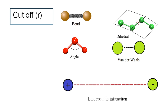The cutoff of interaction is also required to speed up MD simulation calculations. As explained in part 1, there are bonded interactions like bond, angle, and dihedral, and non-bonded interactions like van der Waals and electrostatic. Bond, angle, dihedral, and van der Waals are short-range interactions. Atoms usually interact within 0.5 nanometers, that means 5 angstroms.